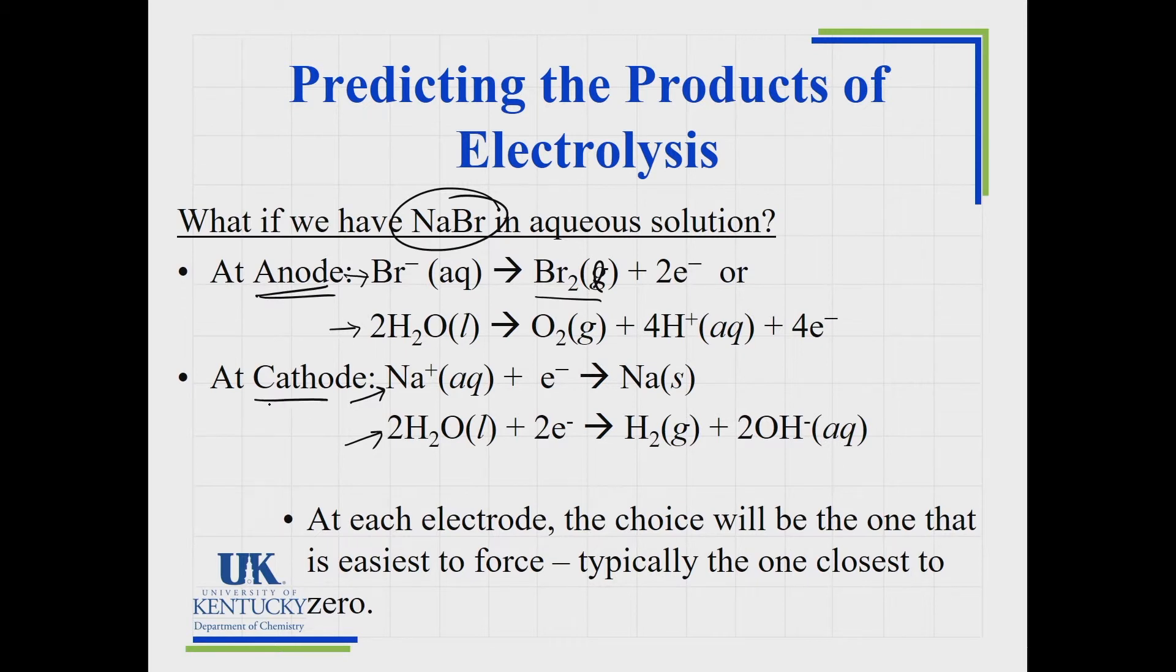At each electrode, the choice is going to be the one that's easiest to force the electrons to do this thing. In both cases, the question is: is it easier to force bromide ions to become bromine the element, or is it easier to force water to give you oxygen? And at the cathode, the question is: is it easier to force sodium ion to take an electron, or is it easier to take water and turn it into hydrogen gas? The way you do this is to come up with the cell potentials for the reactions that you see there. You're going to find the one that's easiest to force the electrons to do their thing, force them off or force them on, depending on whether it's an anode or cathode. And this is typically the one that's closest to zero.